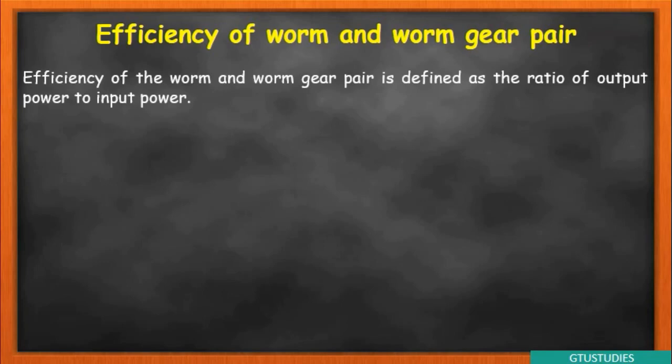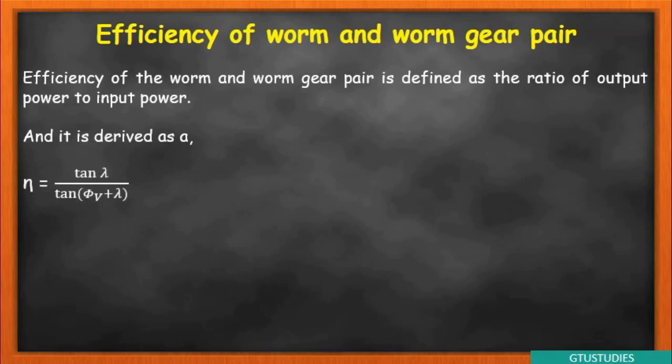The general definition of efficiency: output power upon input power — very simple. Output power means the power given out by the driven member, i.e., the worm gear. Input power is what is given to the worm. So efficiency = output power / input power. The equation derived for this is: efficiency = tan λ / tan(φv + λ), where λ is the lead angle as defined in terminology.